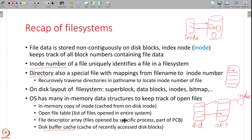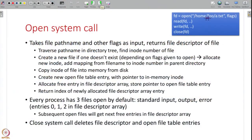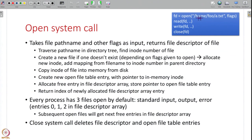In this lecture we will see how system calls like file open, read, and write are implemented. The open system call takes a path name as an argument and a few flags that describe how the file should be handled, and it returns a file descriptor — a handle number.